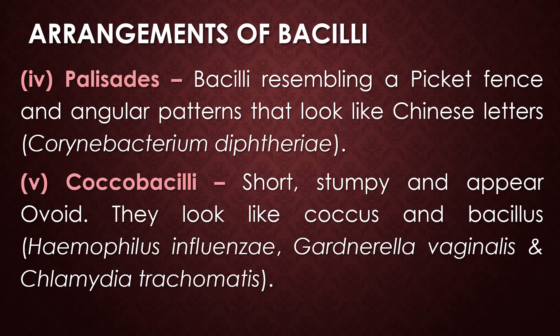Coccobacilli are short, stumpy, and oval-wide in shape. Their shape looks like both coccus and bacillus, so they are named coccobacillus. Examples of coccobacilli are Haemophilus influenzae, Gardnerella vaginalis, and Chlamydia trachomatis.